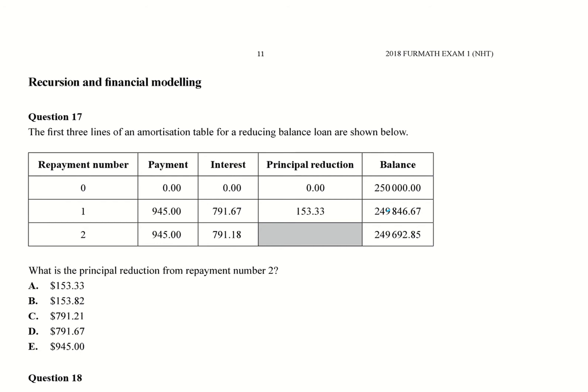So we've got here question 17, the first three lines of an amortization table for a reducing balance loan as shown below.